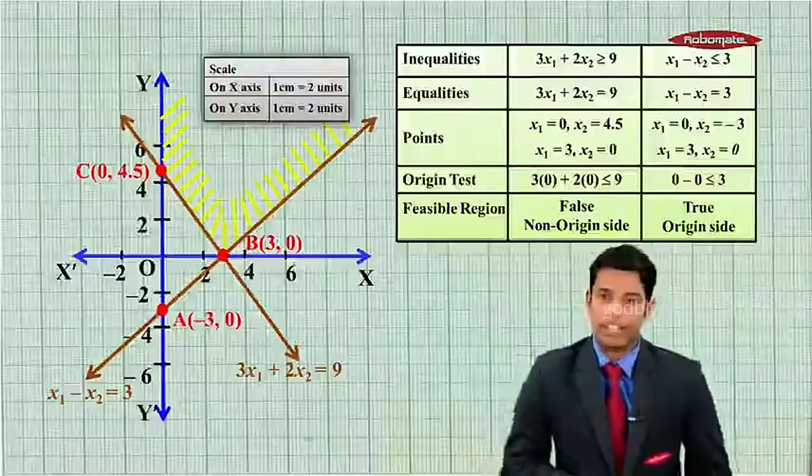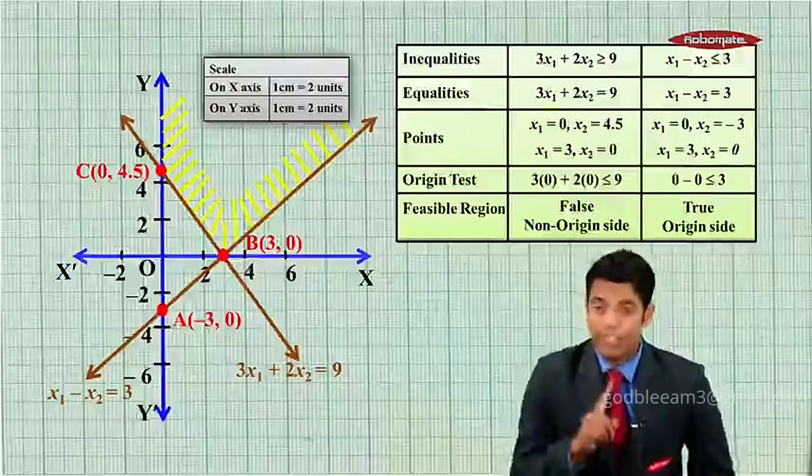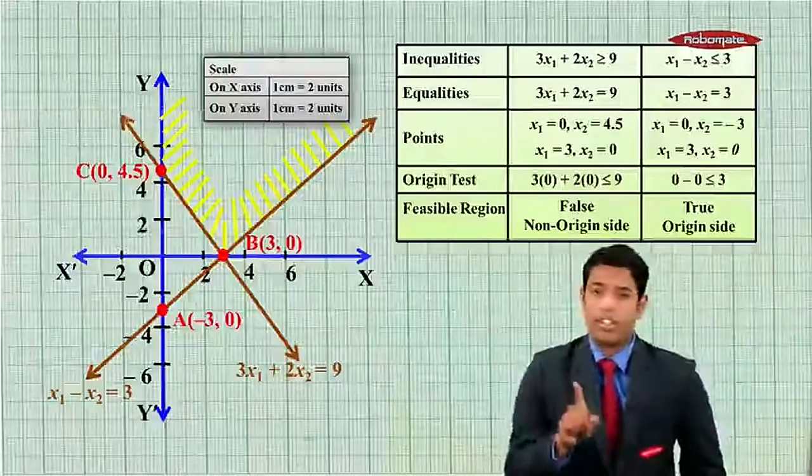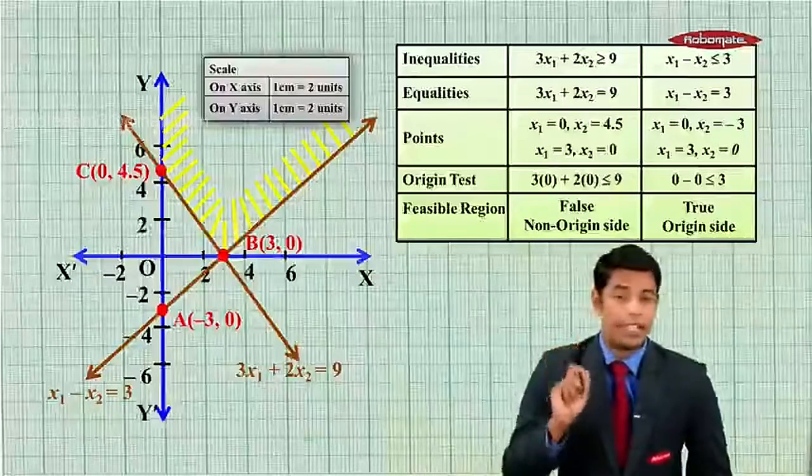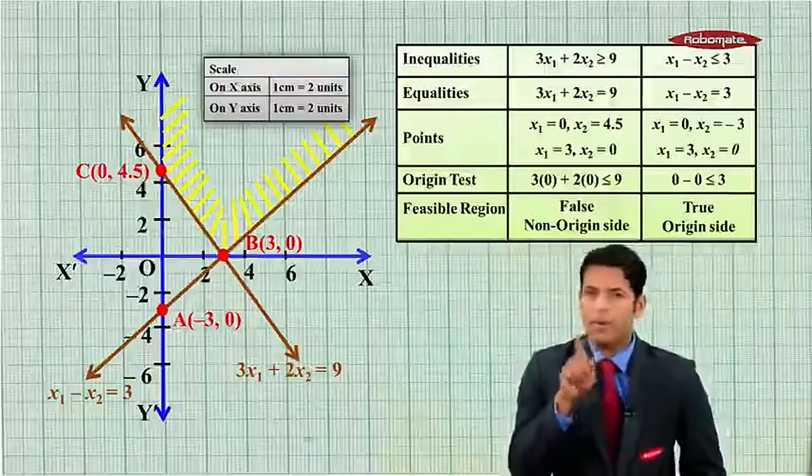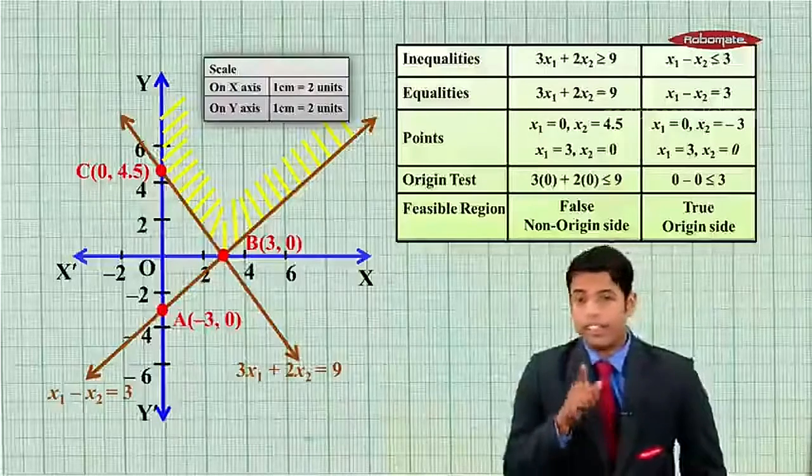Now we got the feasible region. You can observe here that we need to maximize in this problem, but the shaded region is unbounded. That is, the shaded region can extend up to positive infinity, correct?